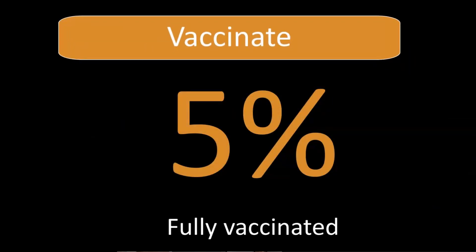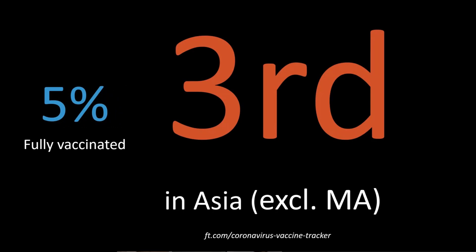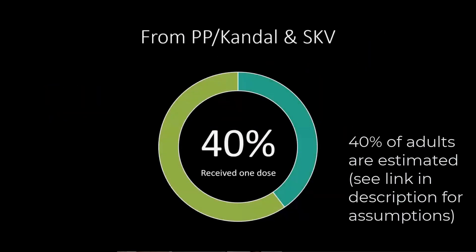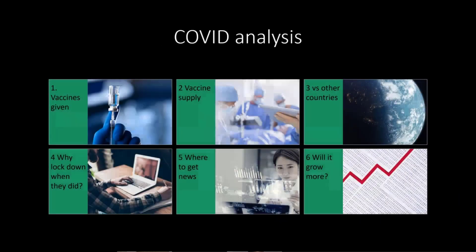I'm going to start with vaccination, and this is somewhere where Cambodia is doing fantastically well. Over 5% of the population is now fully vaccinated. Although that might seem like a low number, that puts Cambodia third in Asia — it just hit third overnight. Excluding the Middle East, Cambodia is number three in terms of fully vaccinated people, and it's vaccinating about 50,000 a day for the last two weeks. Even more impressive: in Phnom Penh, Kandal, and Sihanoukville, 40% of people have received one dose.